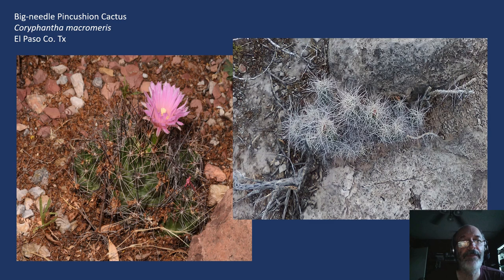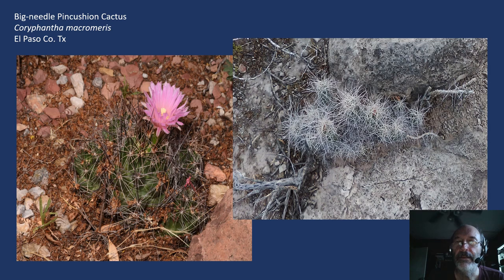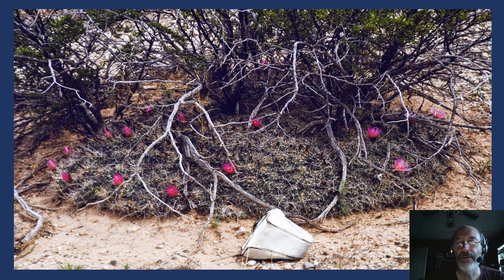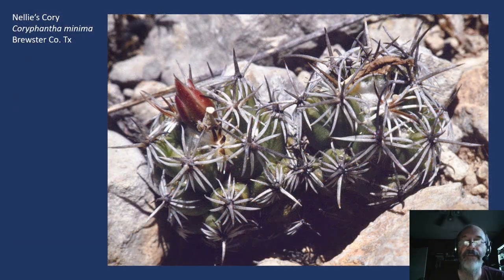With a much wider distribution, we have the big needle pincushion cactus, Coryphantha macromeris, over much of West Texas and the Chihuahuan Desert. The one on the left was photographed in El Paso County; the one on the right in Otero County, New Mexico, and it has some of the stranger spines I've seen in any Coryphantha macromeris — really wild spines. This also shows how large these mounds of Coryphantha macromeris can get — I've got a camera case there for reference — and it would be interesting to know how old this particular cluster of plants is.